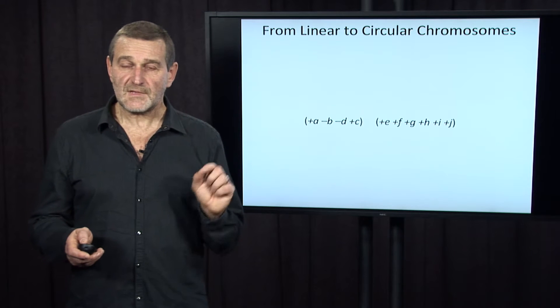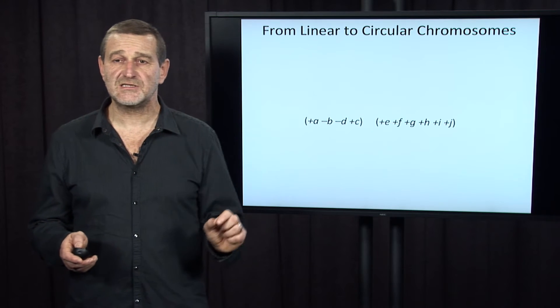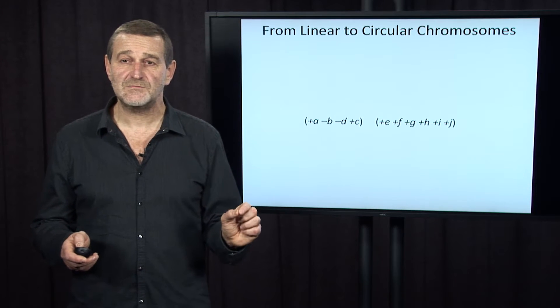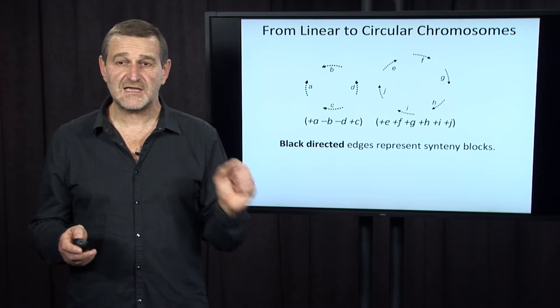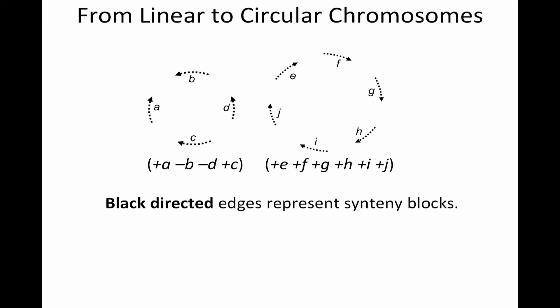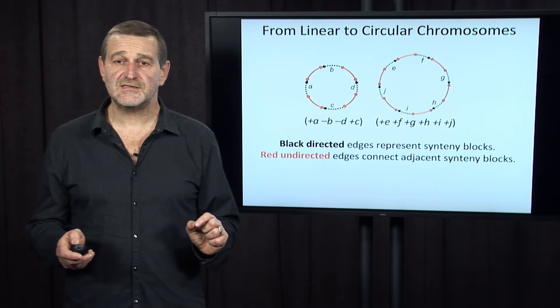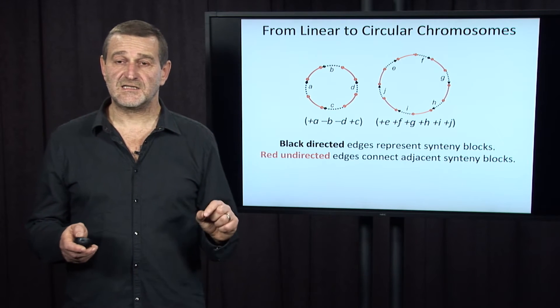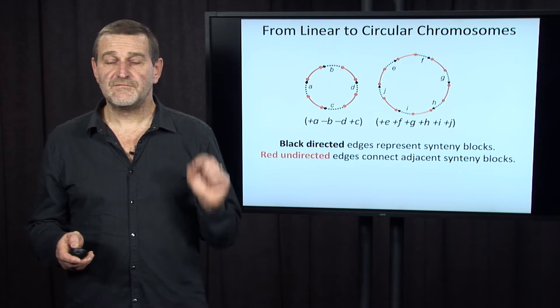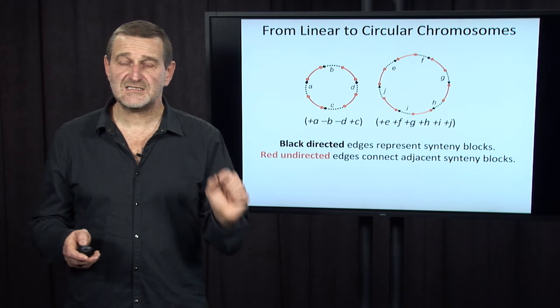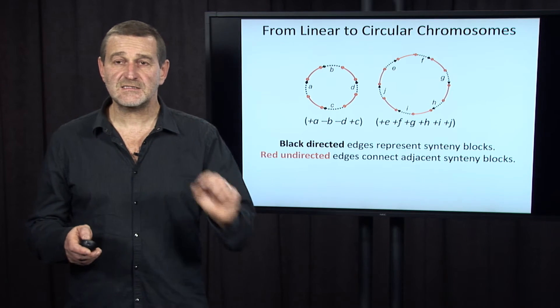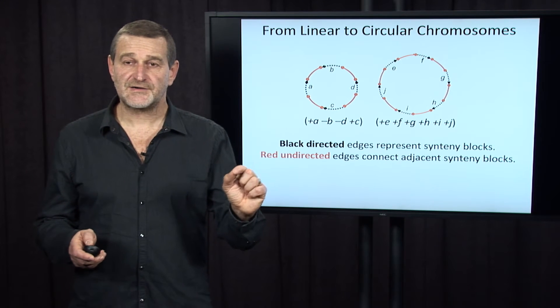So now we will look at cyclic genomes — in this case, a cyclic genome with circular chromosomes consisting of two chromosomes. We will arrange blocks in these chromosomes as directed black edges. For example, plus A, minus B, minus D, plus C will be arranged as four edges with corresponding orientation along the circle. We will then add undirected red edges connecting adjacent synteny blocks, so the two-chromosomal genome is represented as a graph consisting of two cycles with edges of two colors: red and black.